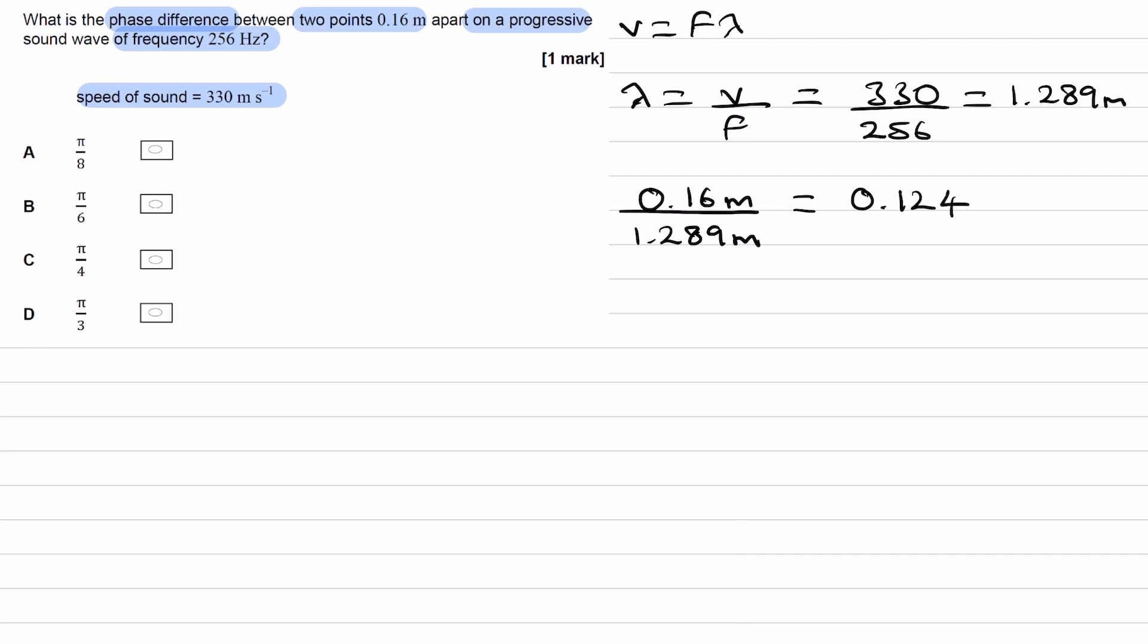So it doesn't give us a nice fraction, which is a bit of a problem because if we then want to convert this to degrees or radians, we'd have to times it by either 2π or times it by 360. In this case, we times it by 2π because we want our final answer in radians. But if we multiplied 0.124 by 2π, we wouldn't get a nice fraction next to our π like we have here.